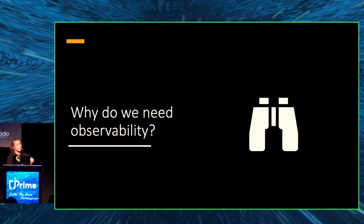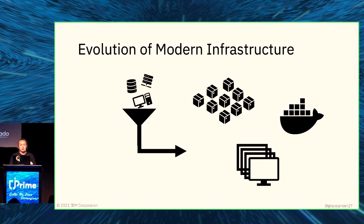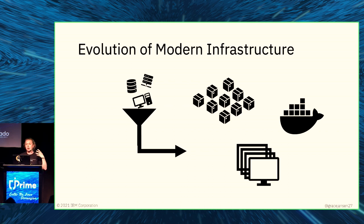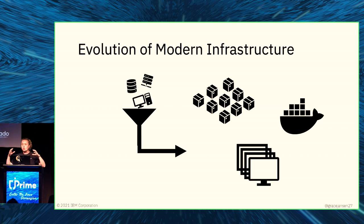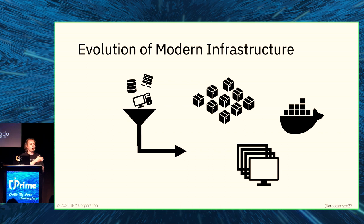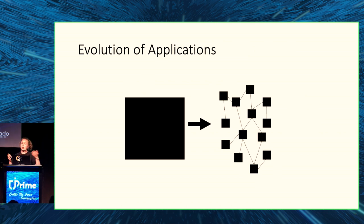Starting with the why — why do we need observability in the first place? If we look at how we've arrived at where we are today, the evolution of both our infrastructure and our applications has played a key role. We've moved from single core to multi-threading, multiple cores, virtualization, containerization, and this inherent distributed nature in the cloud. As a result, our applications have also evolved alongside our infrastructure.